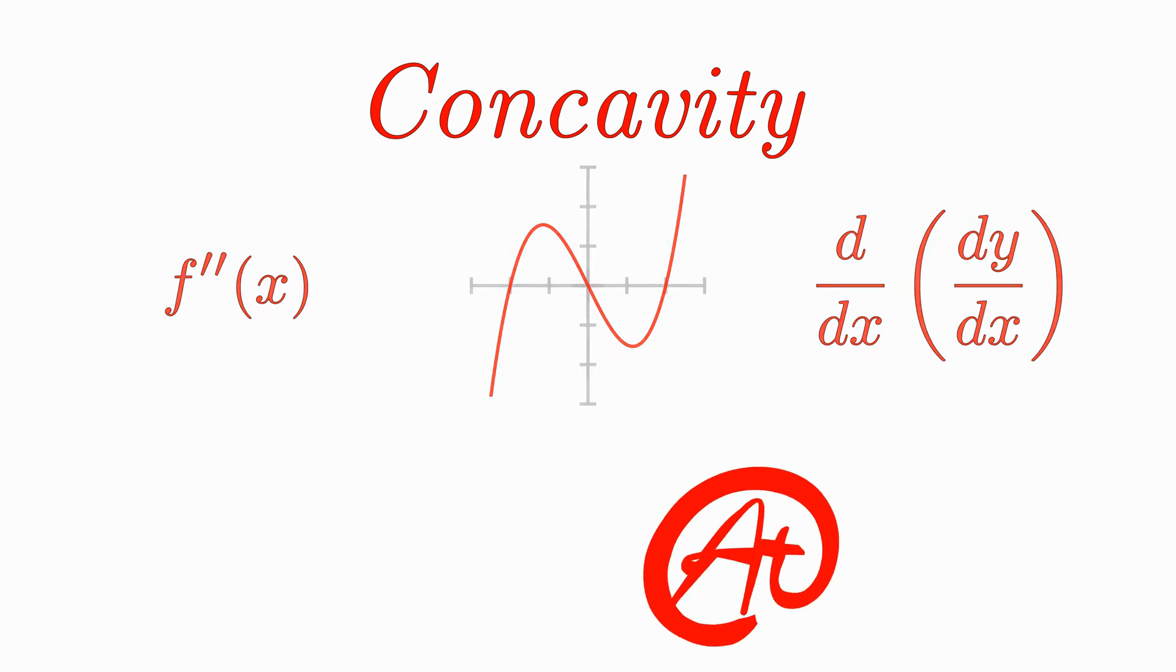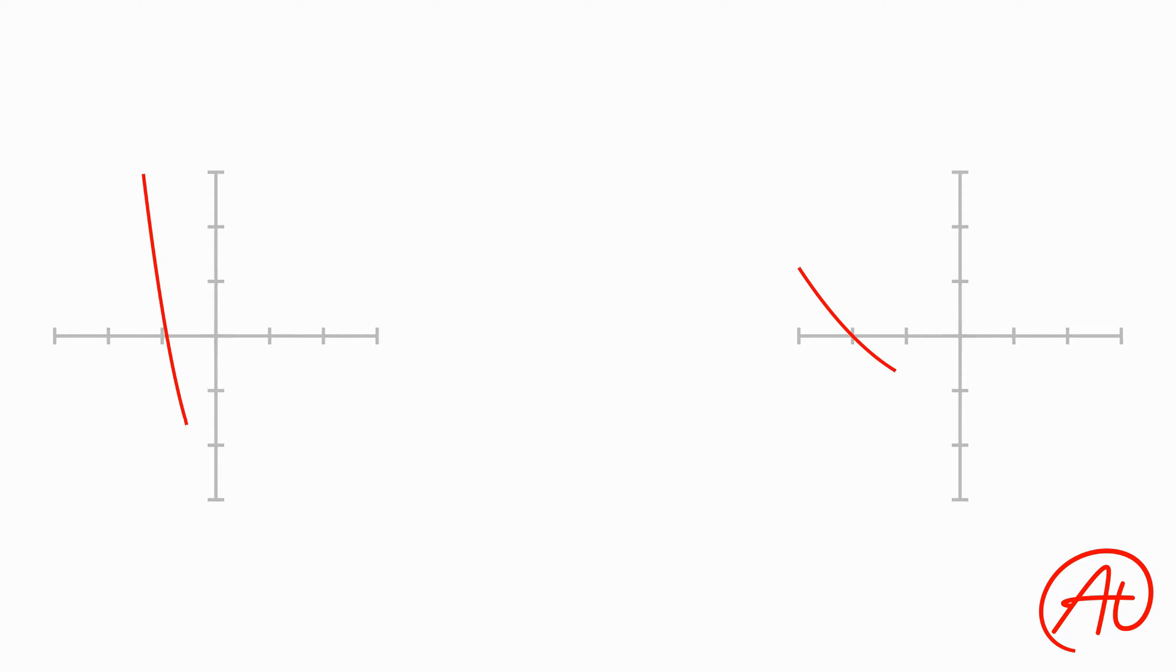Okay so what the heck is concavity? Basically, concavity is a measure of how much a curve bends at a particular point. For example, take a look at these two graphs. Because the one on the left seems to bend a lot more than the one on the right, it will have a much higher concavity than the curve on the right.